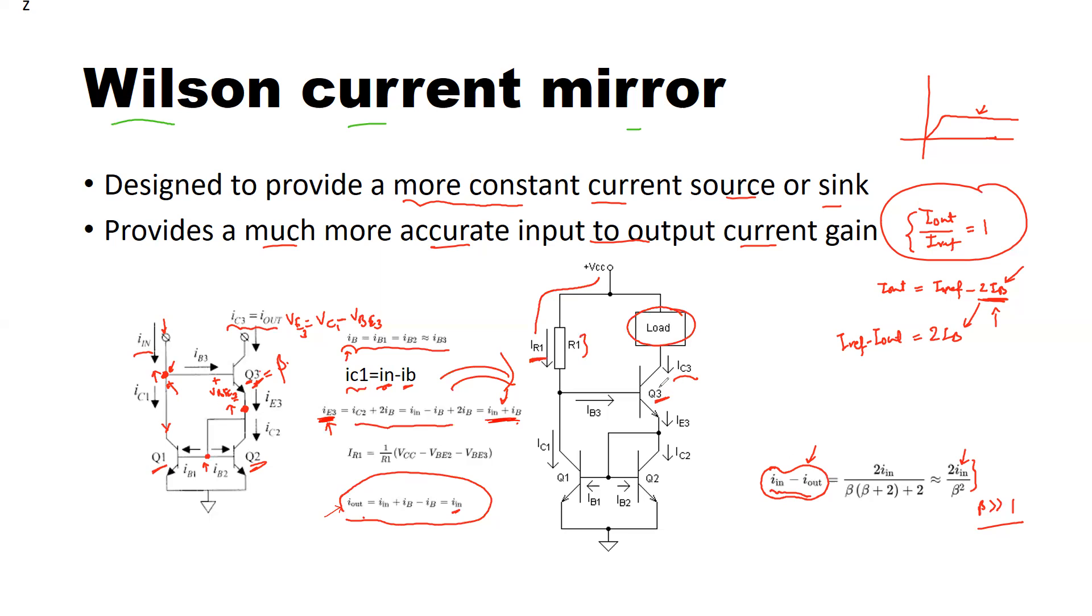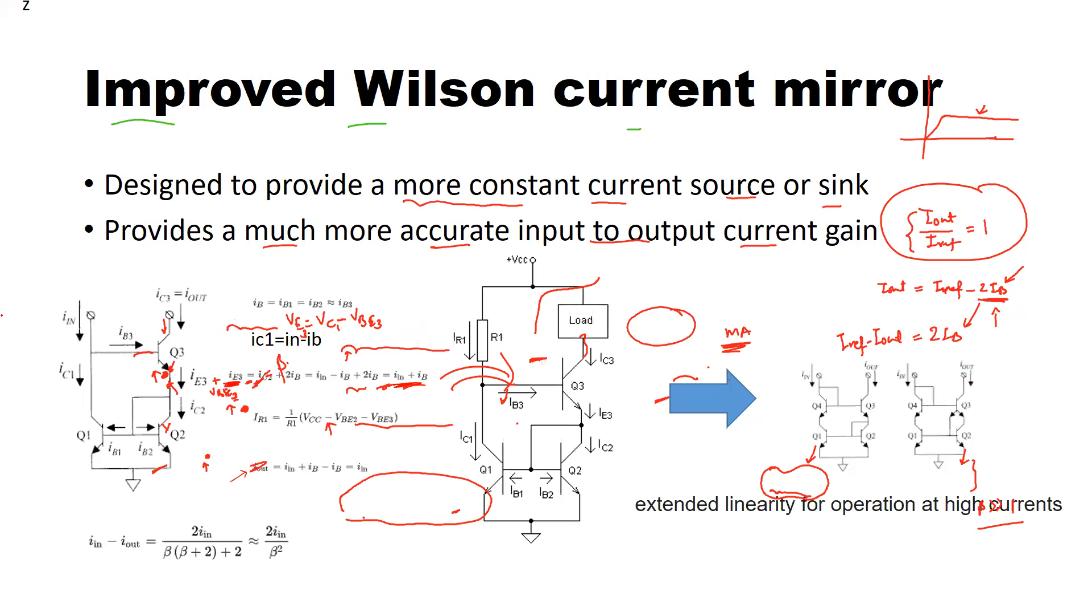Now we can still improve the performance of the Wilson current mirror, especially at high currents. If we have the current mirror to be operated in the milliampere current range, we can make some arrangements. This circuit that I am going to show you is an improved version of the Wilson current mirror.